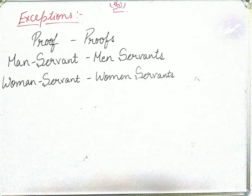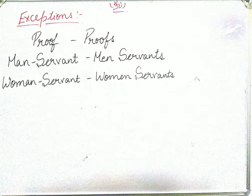Proof becomes proofs. For compound nouns: 'man servant' becomes 'men servants' — both 'man' changes to 'men' and 'servant' becomes 'servants'. Similarly, 'woman servant' becomes 'women servants'. So these were the few exceptions in singular and plurals. You have to learn these — you cannot make these plurals using the previous rules.